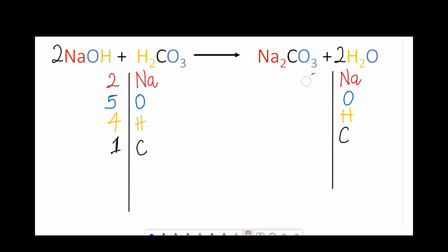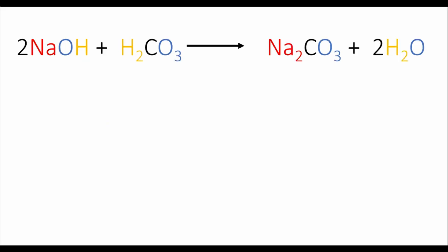So once I do that, I recalculate how many of each atom I have on the right side. So I have two sodium atoms, five oxygen atoms - remember that is three plus two - and I have four hydrogen atoms and one carbon atom. So I'm just going to go through from top to bottom. I've got two sodium on either side, five oxygen on either side, four hydrogen on either side, one carbon on either side. And that's it, we're balanced.